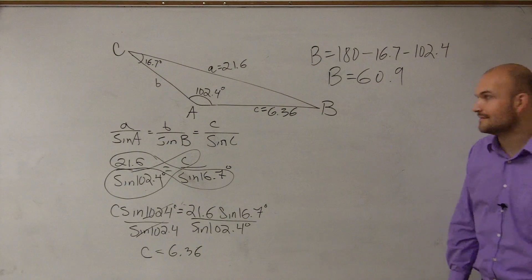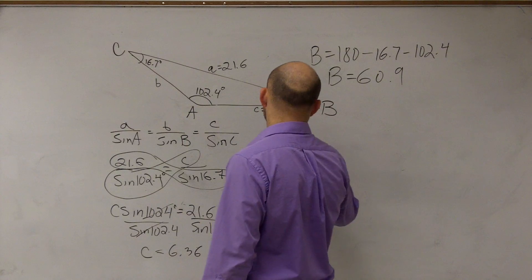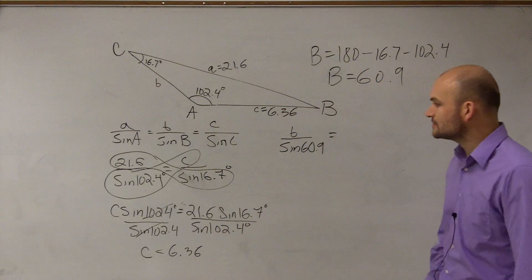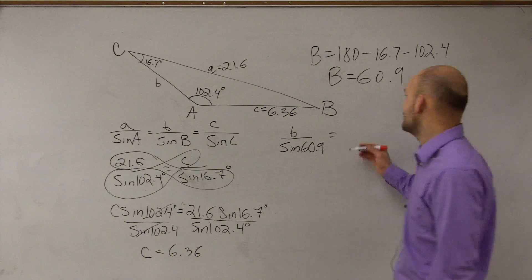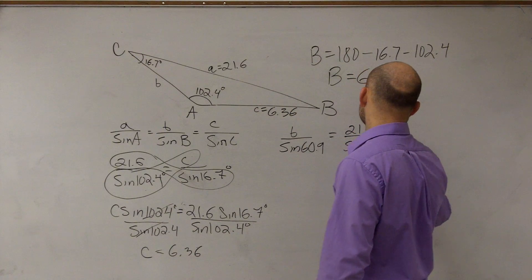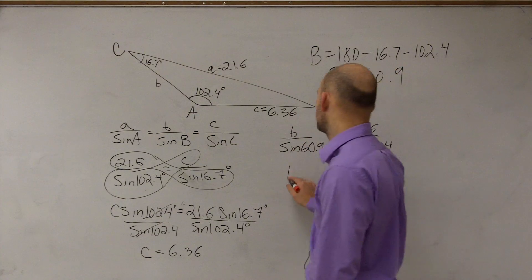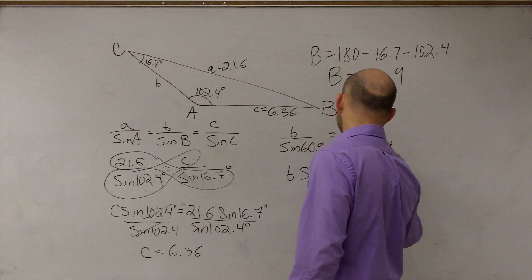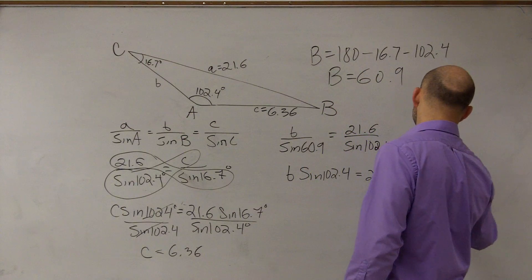And then we have to apply Law of Sines again, because Law of Sines are so much fun. I guess nobody got that one. And then again, we can use either C or A. I prefer to use what we've already been given, which was A. So let's just use 21.6 over the sine of 102.4. Cross multiply. B times sine of 102.4 equals 21.6 times the sine of 60.9.